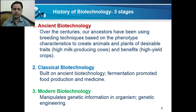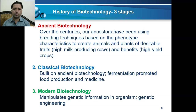Classical biotechnology was built on ancient biotechnology. During this stage, fermentation promoted food production and medicines were produced. In modern biotechnology, scientists manipulate the genetic information in organisms and through genetic engineering create better crop varieties and better animal varieties.